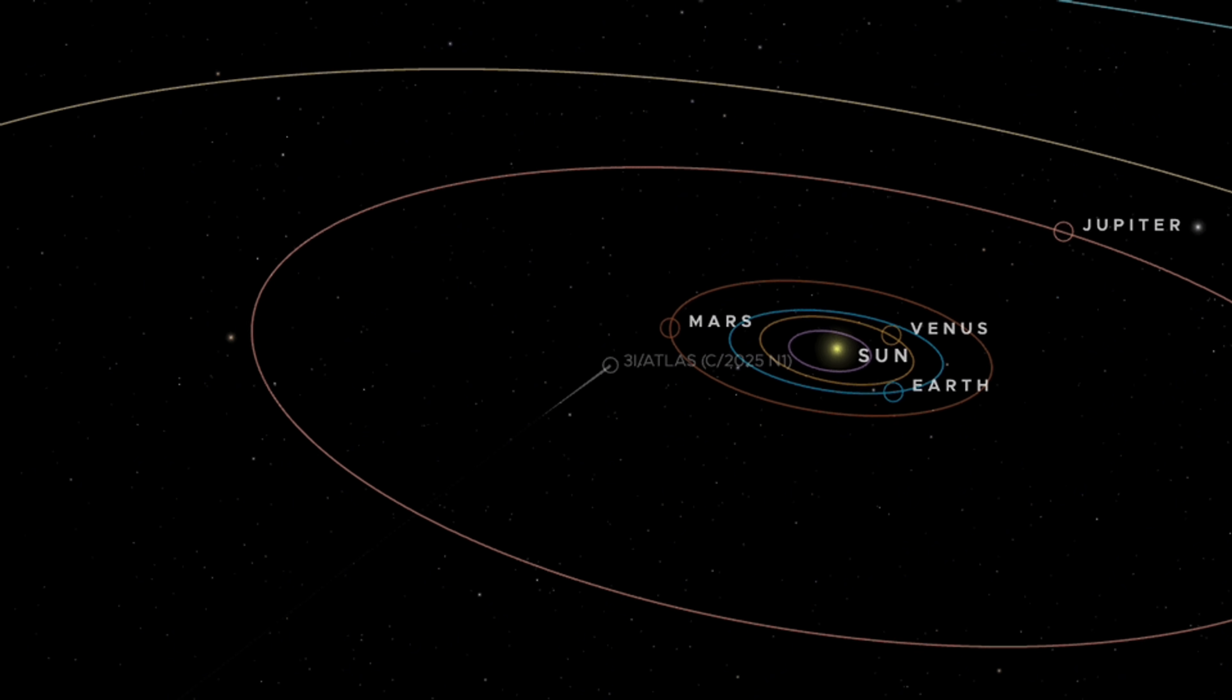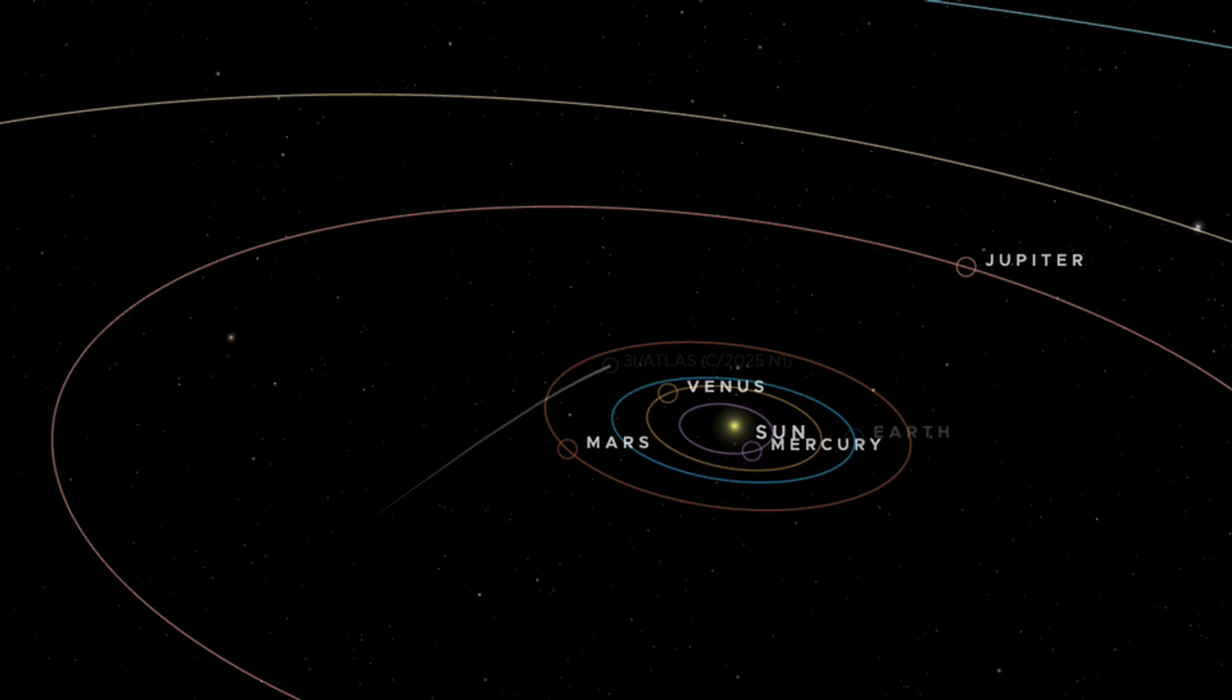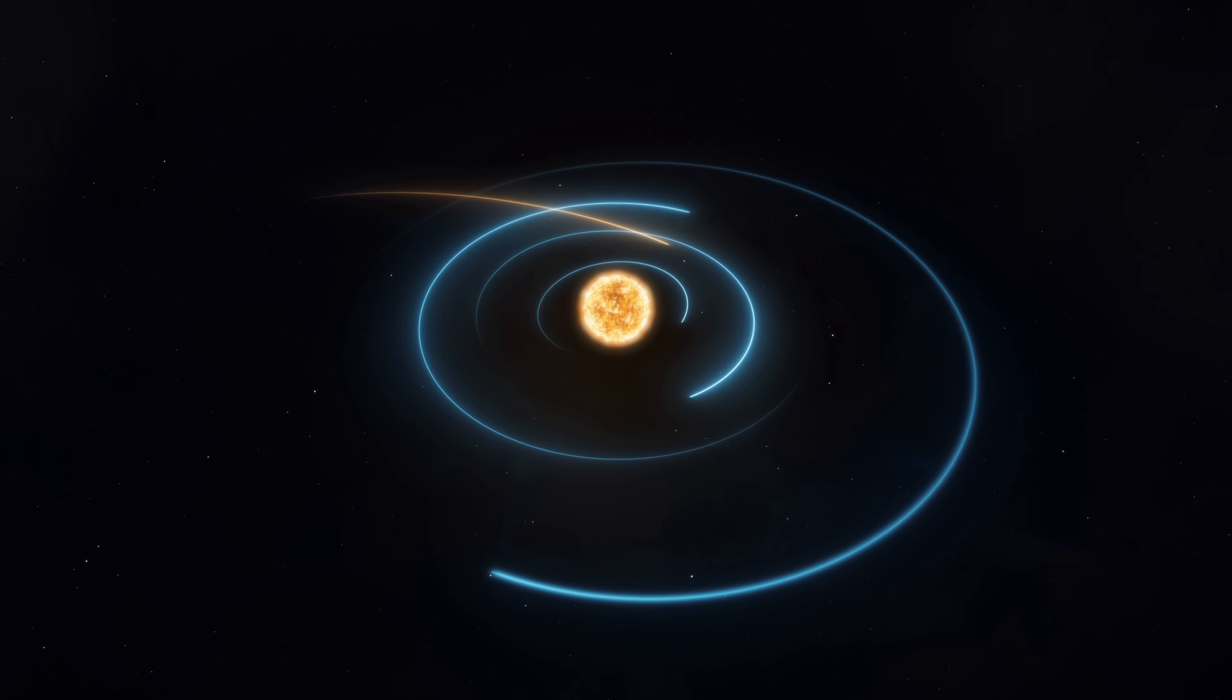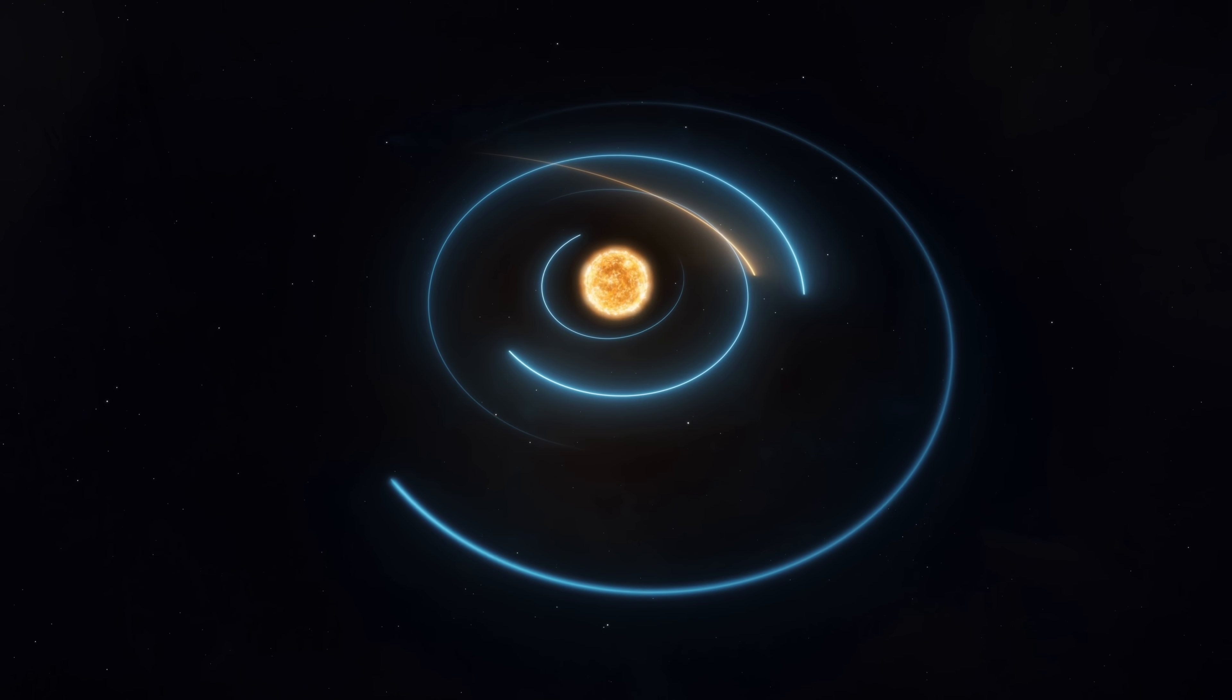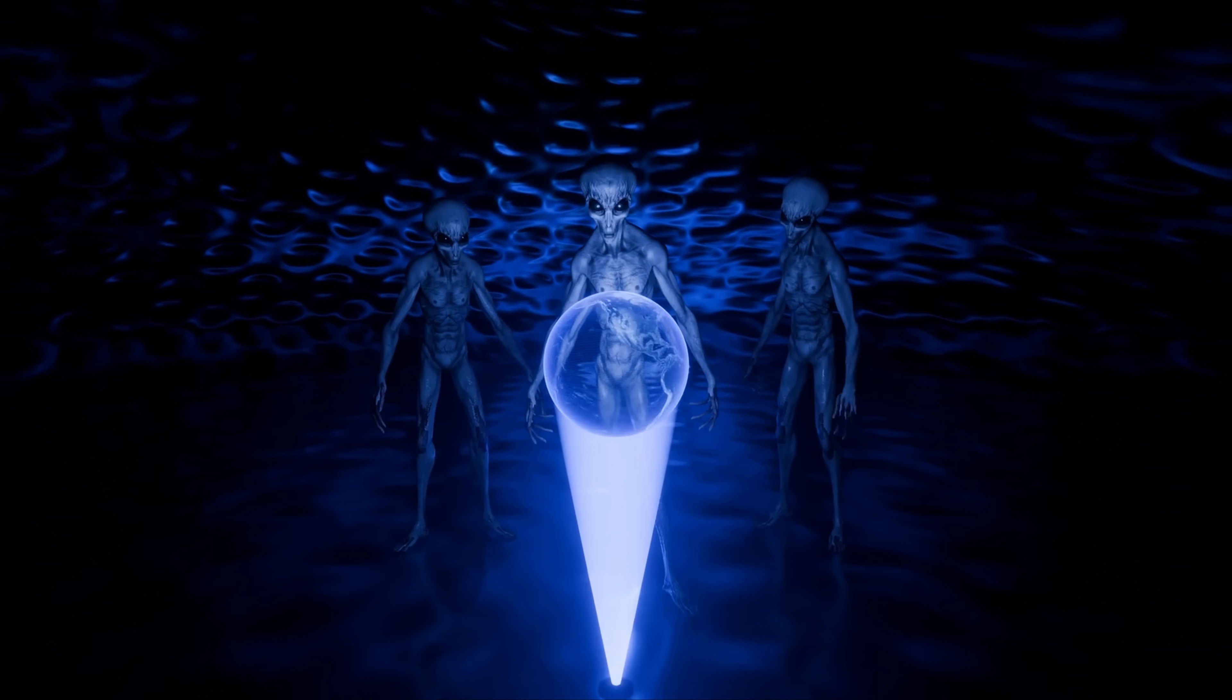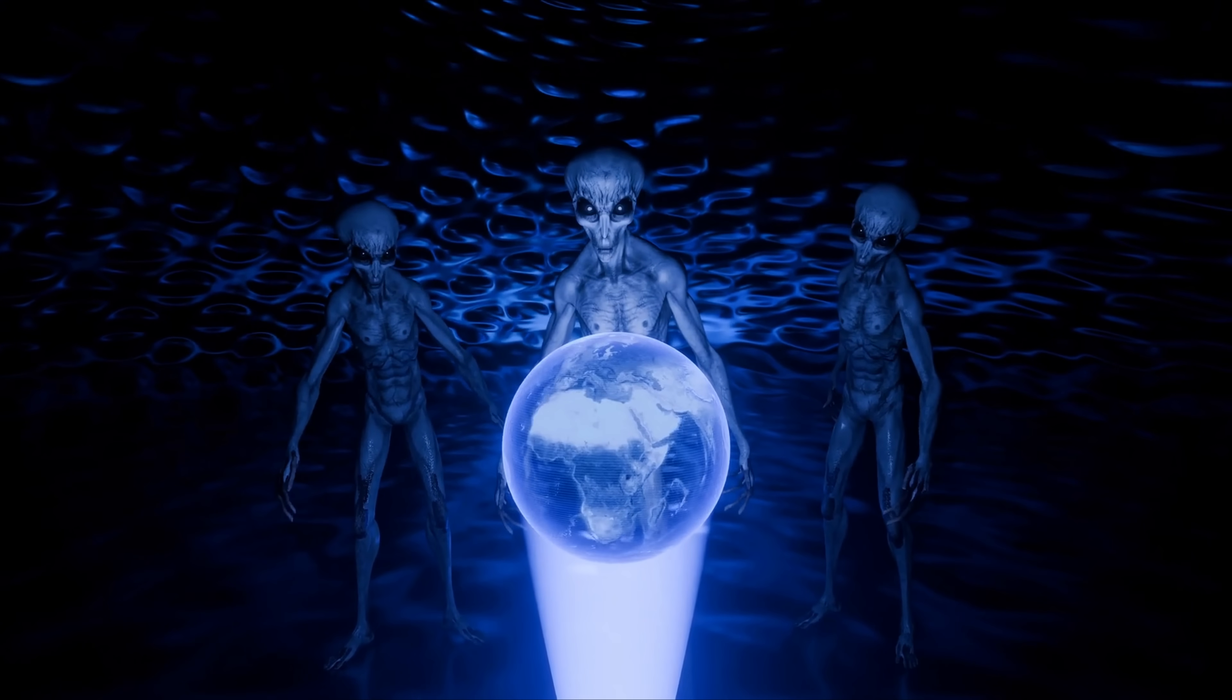Astronomers will go on charting its motion, parsing its spectra, and probing for every scrap of evidence that might reveal its true nature. Yet for those willing to entertain the extraordinary, 3i Atlas already stands as the most compelling candidate for alien technology we have encountered. Not in the form of a message beamed across the stars, but as an object itself, an enigmatic traveler threading through our solar system, offering the tantalizing possibility that we are being observed, or perhaps even visited, by intelligence not of Earth.